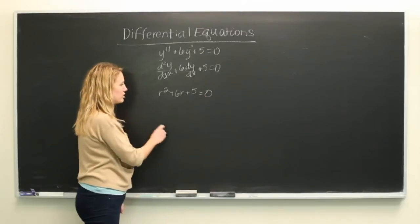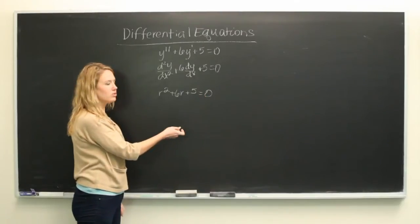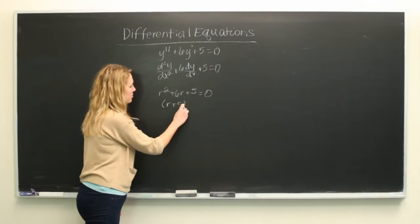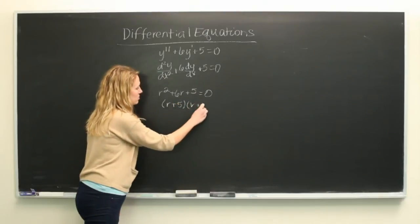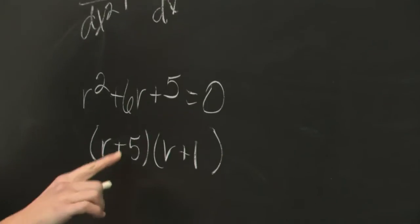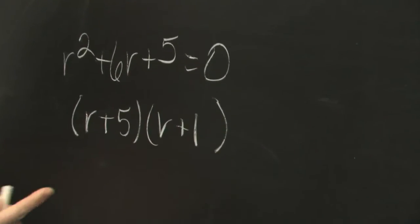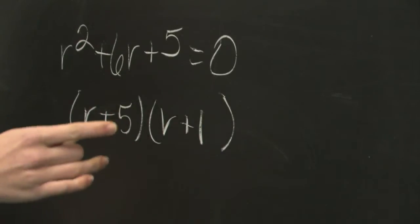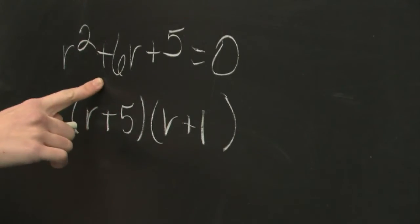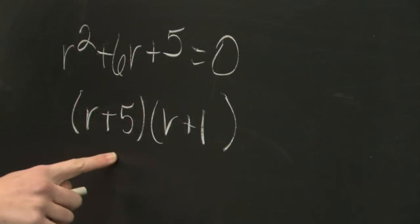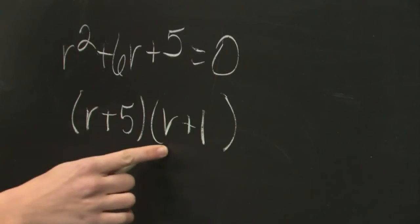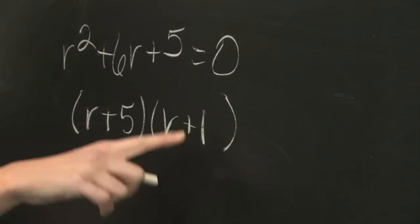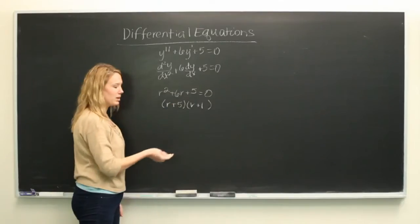And we're going to unfoil this, so factor this trinomial. Both signs are positive since the second sign is plus that means both signs will be the same and it takes the sign of the first term which will be plus. We know that r squared is equal to r times r and that 5 times 1 will give us 5 when we add them it will give us 6.